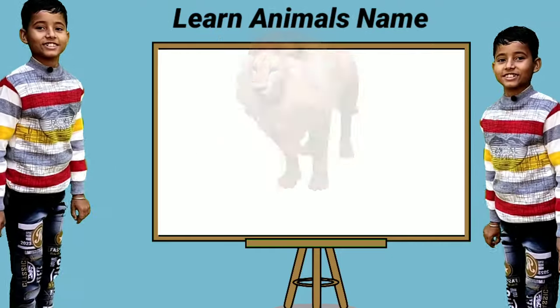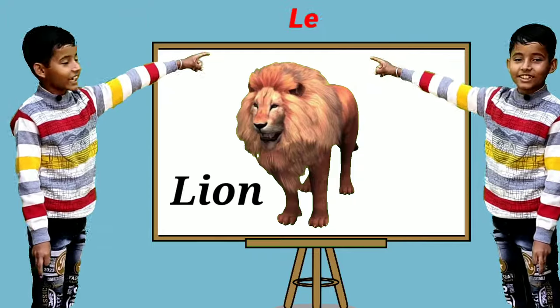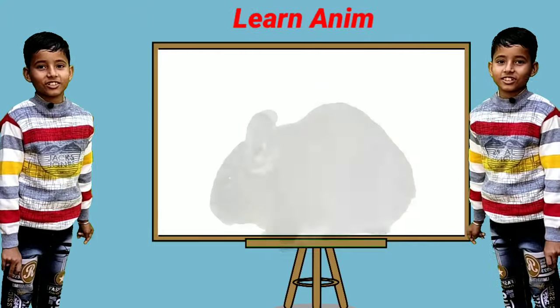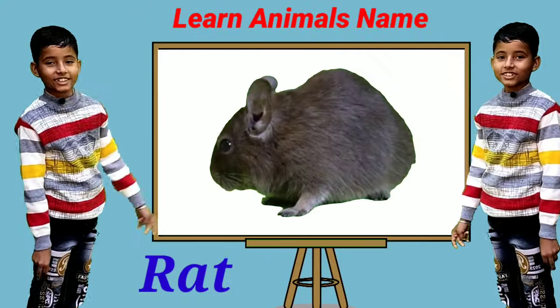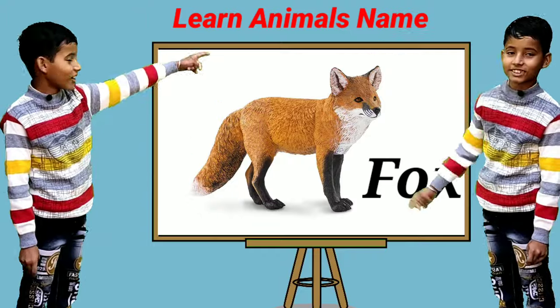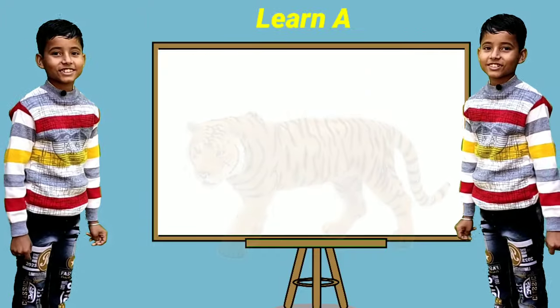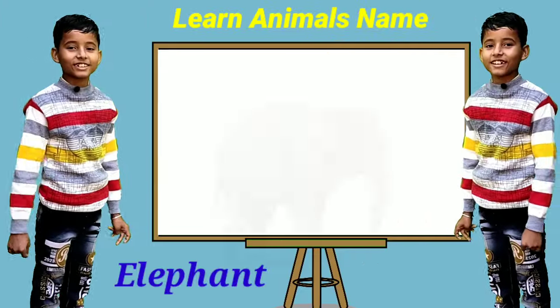This is a cow. This is a Nile. This is a rat. This is a fox. This is a tiger.